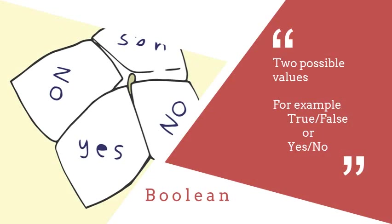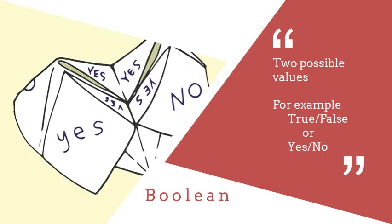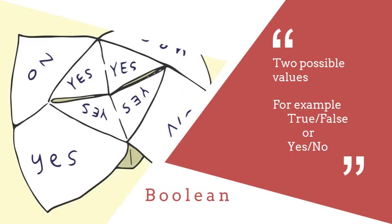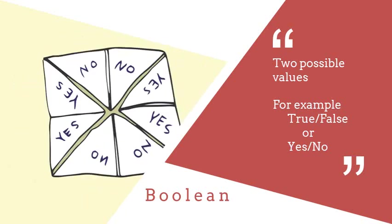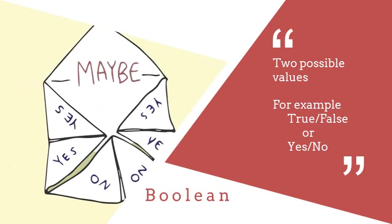Now the final example is called a boolean. And the boolean takes me back to my database. This will only have two possible values. It can either be true or false, or it can be yes or no. No, there's no maybe.